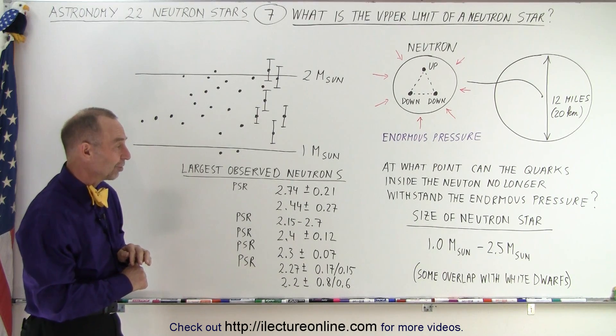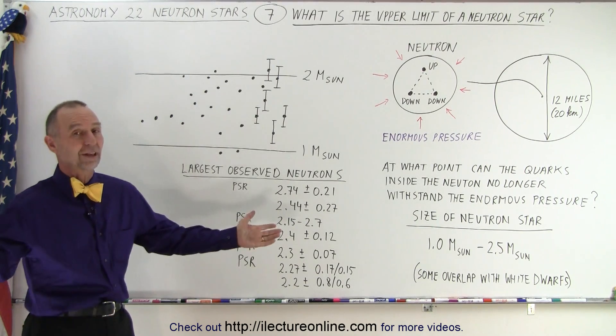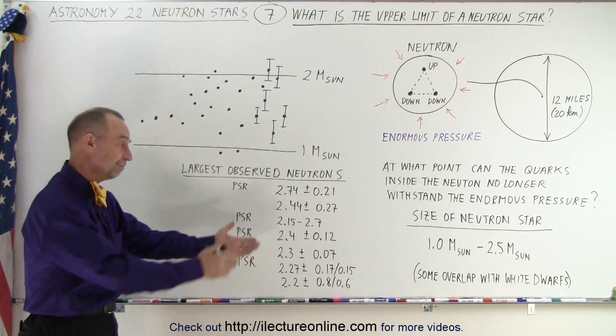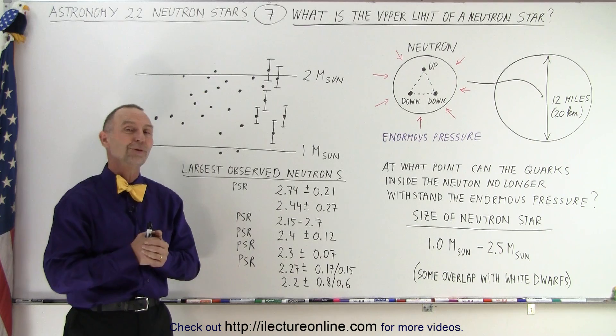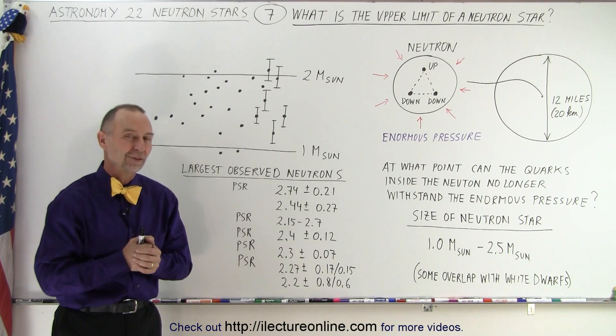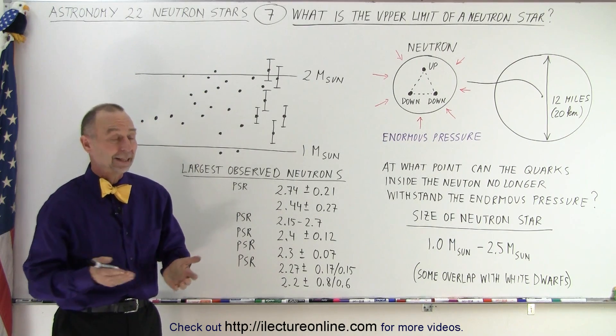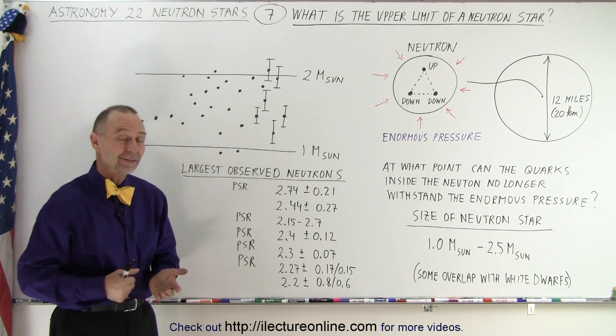So if someone asks what is the typical mass of a neutron star, the answer is somewhere between 1 and 2.5 times the mass of the sun.